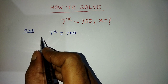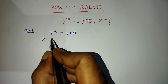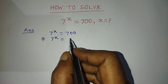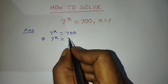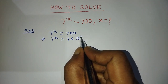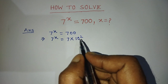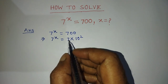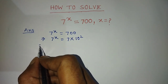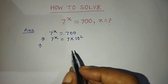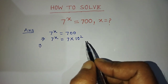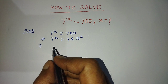So we write 7 to the power x on the left hand side, and on the right hand side we write 7 into 10 squared. If you write 700 in exponential form, we write it as 7 into 10 squared. After that, to find the value of x, we have to take log on both sides.